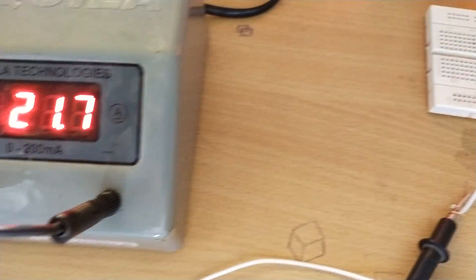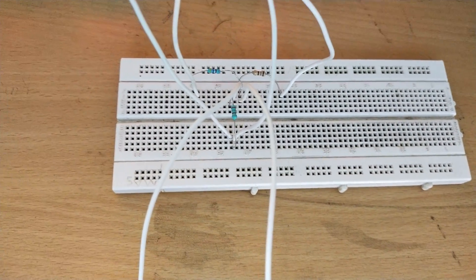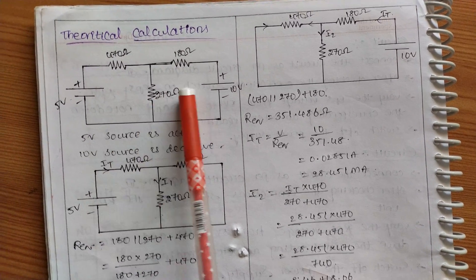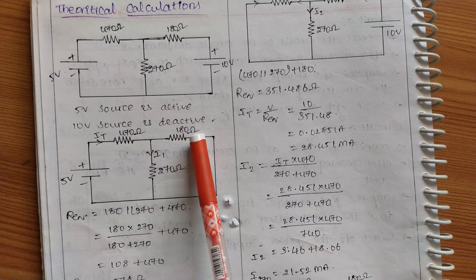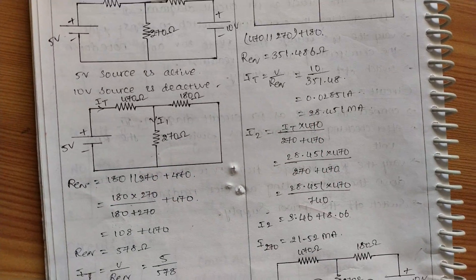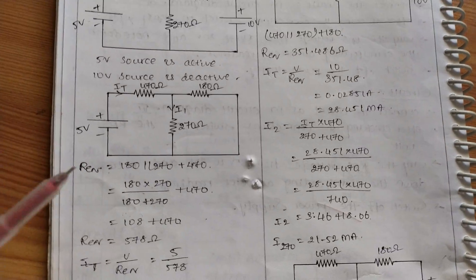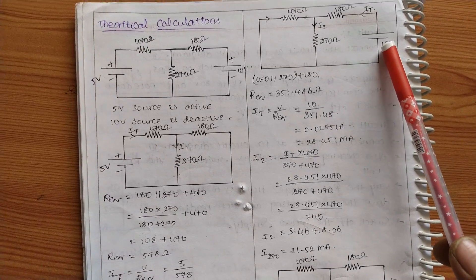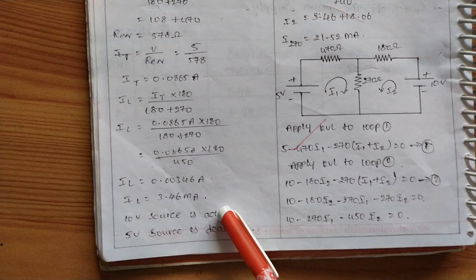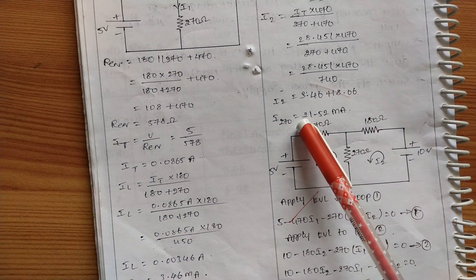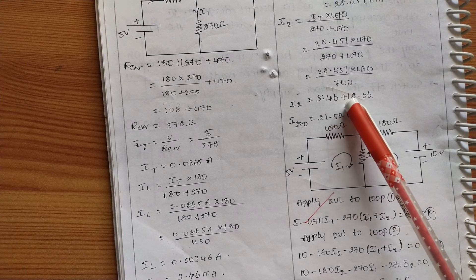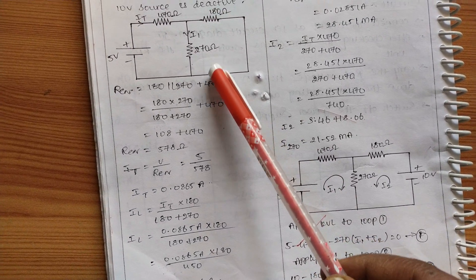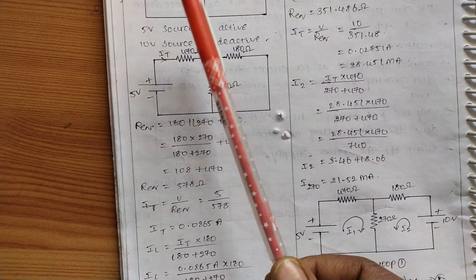Superposition theorem is verified. Theoretically, with the 5 volt source active and the 10 volt source deactivated, the current I1 is 3.46 milliamps. With the 10 volt source active and the 5 volt source deactivated, the current I2 is 18.4606 milliamps. The total theoretical current is I1 plus I2 equals 21.52 milliamps through the 270 ohm resistance, closely matching the experimentally measured value.